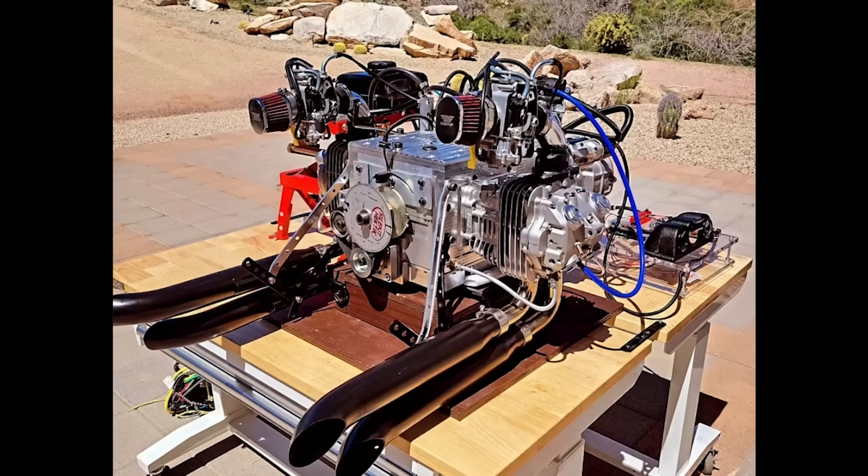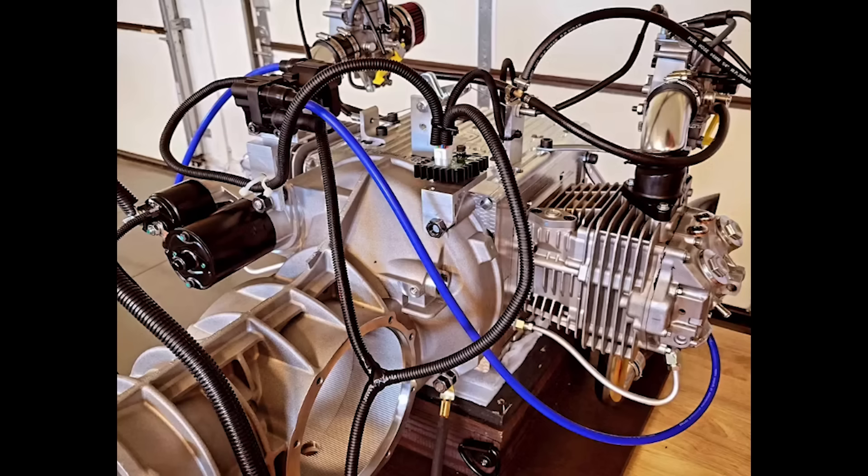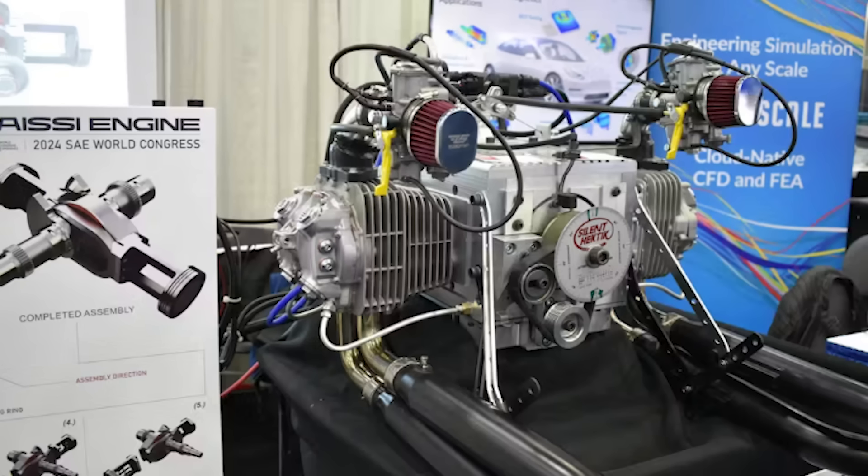But to end this video off, the Wasey engine isn't a flashy headline-grabbing concept like a Tesla or a Rimac hypercar. It's a quiet, thoughtful rethink of a 130-year-old machine. It's not about tearing up the rulebook, but rewriting it to reduce friction, weight and complexity while boosting efficiency. If there's one thing this story teaches us, it's that innovation doesn't always come from giant companies or headline-grabbing startups. Sometimes it comes from a determined engineer with a sketchpad, a physics lesson and a stubborn refusal to accept the status quo.